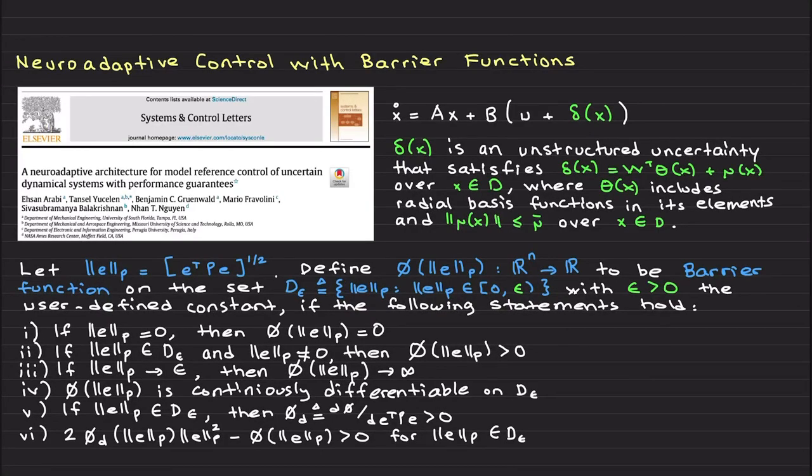Welcome back. In the last lecture, we used Lyapunov barrier functions in model reference adaptive control to constrain the error, the difference between system state x and reference model state xr, by a user-defined parameter epsilon. Today we will extend those results to neuroadaptive control.